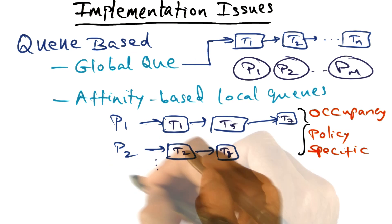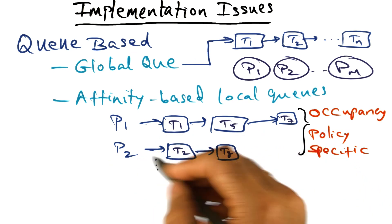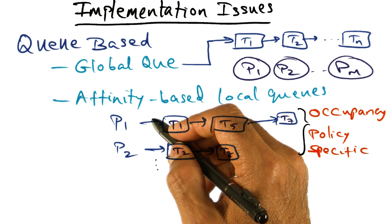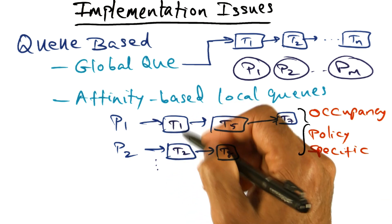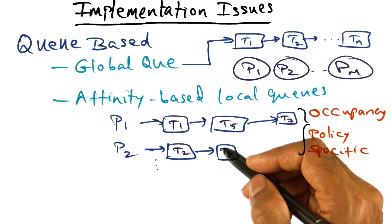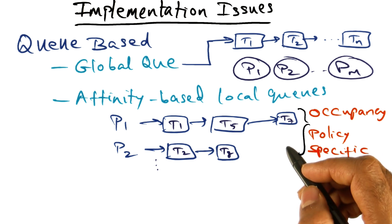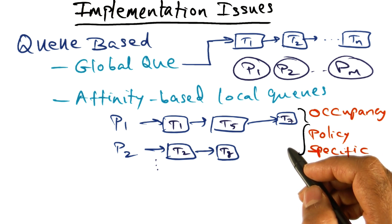And it might be that processor P2 runs out of work completely, nothing in its local queue. In that case, it might poll its peers' queues in order to get some work from other guys and run it on that processor. So that's something that might be done. And that is what is called work stealing in the scheduling literature. So that might be something that is commonly employed in a multiprocessor scheduler.